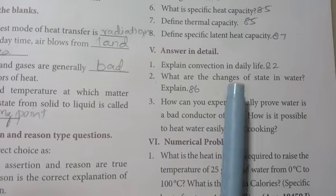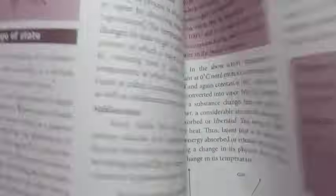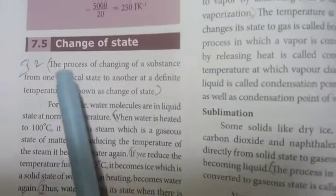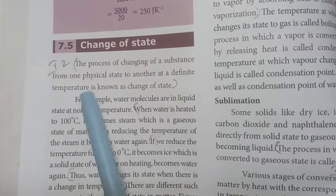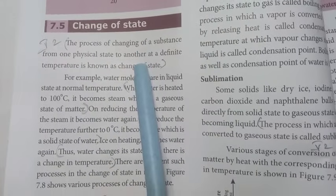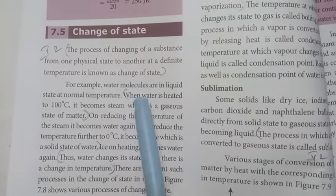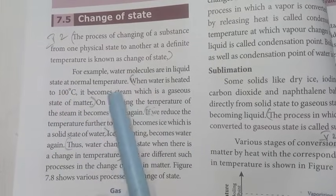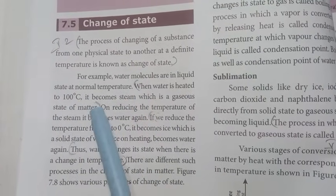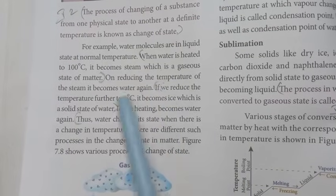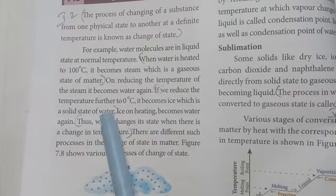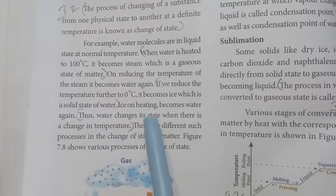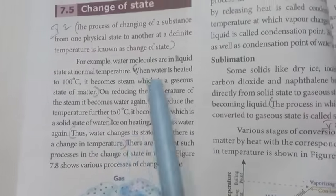Second: What are the changes of state in water? Explain. Page number 86. The process of changing of a substance from one physical state to another at a definite temperature is known as change of state. When water is heated to 100 degree Celsius, it becomes steam which is a gaseous state of matter. If we reduce the temperature further to 0 degree C, it becomes ice which is a solid state of water. Thus water changes its state when there is a change in temperature.